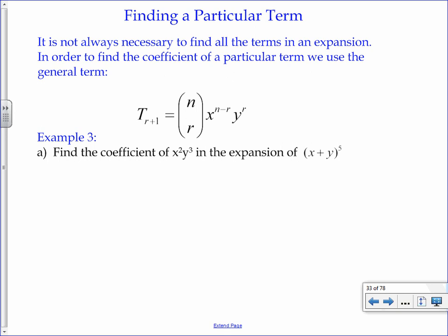But sometimes we only want to pay attention to one particular term in the whole expansion. It might be a particular term using the variables, it might be the constant term, or a term without a variable in it. What we want to do is be able to zoom in on a particular term without having to write the whole expansion, because that can get very cumbersome, particularly if the value of n is large.